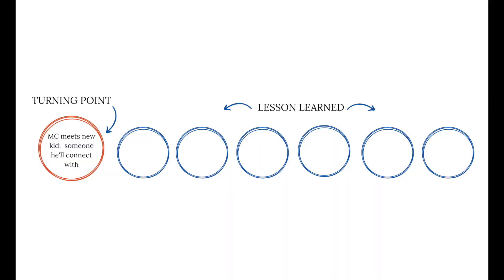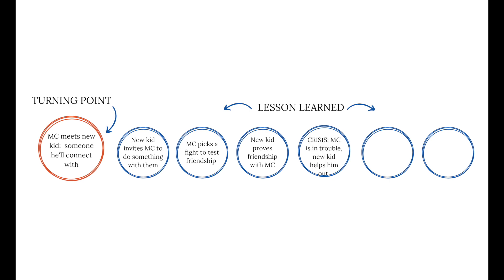From our turning point where the main character has met the new kid, the new kid invites our main character to do something with them. Our main character picks a fight to test their friendship, but the new kid proves friendship by not abandoning them and working through it. Then we can hit our crisis point: our main character is in real trouble and the new kid has to help him out. That leads the main character to realize that this friendship is actually something he can trust, so he opens up to his friend and realizes the true value of their friendship.